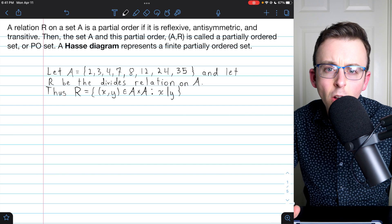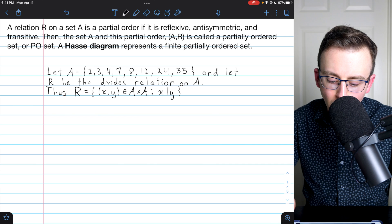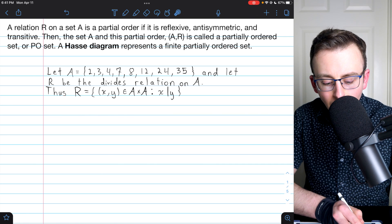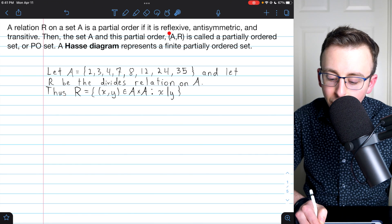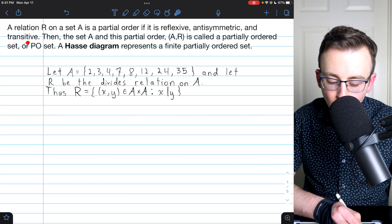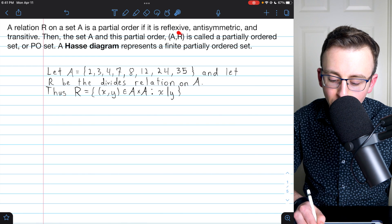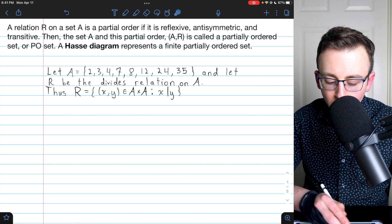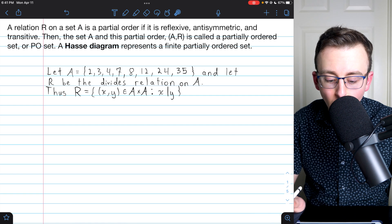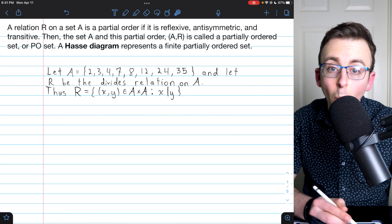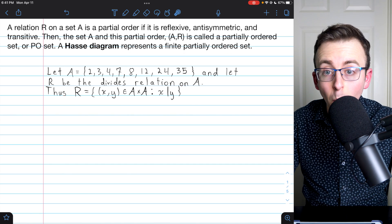To understand Hasse diagrams, you've got to know what partially ordered sets are. I'll leave a link in the description to my lesson on that topic, but I'll also brush you up on it here. A relation R on a set A is a partial order if it is reflexive, antisymmetric, and transitive. Then the set A and this partial order R, which we could represent in an ordered pair, is called a partially ordered set or poset. A Hasse diagram represents a finite partially ordered set.